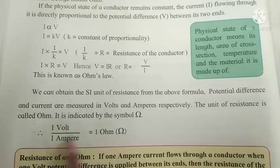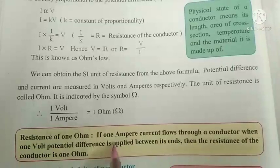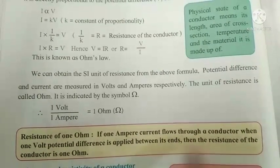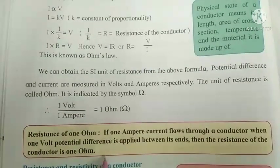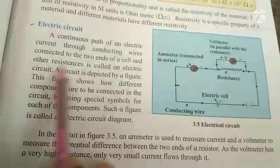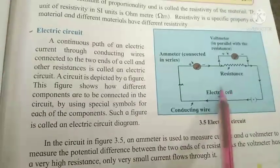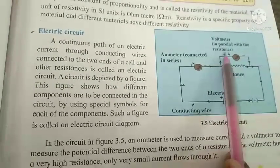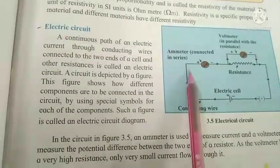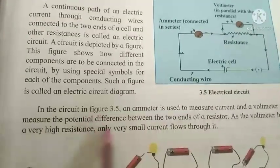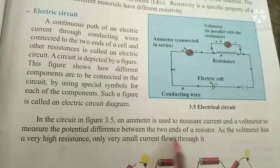Potential difference and current are measured in volts and amperes. The unit of resistance is called Ohm, indicated by the symbol Ω. One volt upon one ampere equals one Ohm. A resistance of 1 Ohm means: if 1 ampere current flows through the conductor when 1 volt potential difference is applied between its ends. In a circuit, an ammeter is connected in series to measure current, and a voltmeter is connected in parallel to measure potential difference across the resistance.